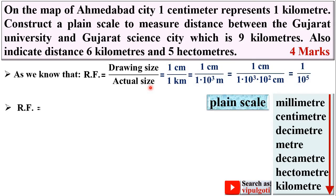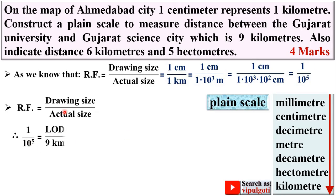Now we start with RF = drawing size / actual size, and RF is 1 upon 10⁵. We need to find the length of drawing (LOD), so it is LOD upon actual size. The actual size is the maximum distance to be measured by the scale, which here is 9 kilometers.